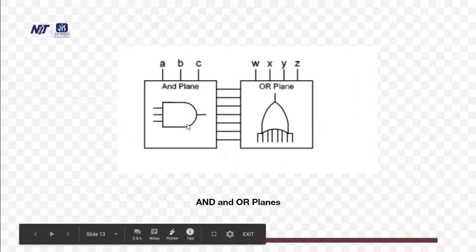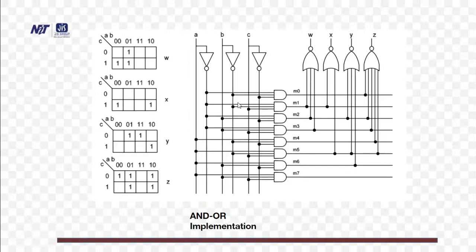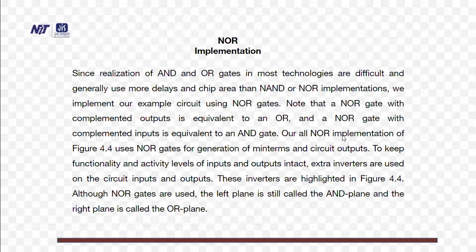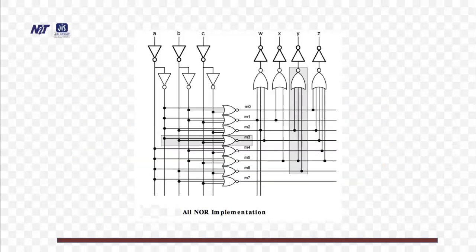NAND and NOR implementation. Since realization of AND and OR gates in most technologies is difficult and generally uses more delay and chip area than NAND and NOR implementation, we implement our example circuit using NOR gates. A NOR gate with complemented output is equivalent to OR, and a NOR gate is equivalent to AND — so AND can be NAND and OR can be NOR. There is no problem; it can be easily implemented. The NOR implementation replaces the AND gate, so it is basically NOR implementation.